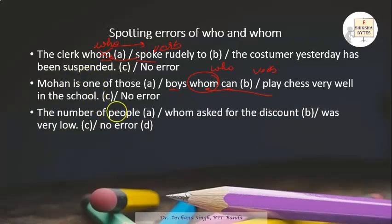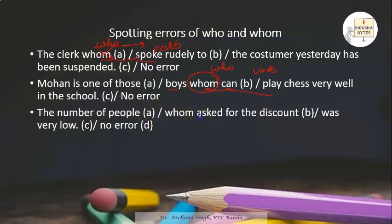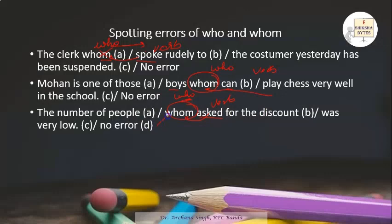'The number of people who asked for the discount was very low.' Here, 'asked' is the verb. Since we use 'who' when followed by a verb, the correct answer is 'who.' So the correct sentence is: 'The number of people who asked for the discount was very low.'